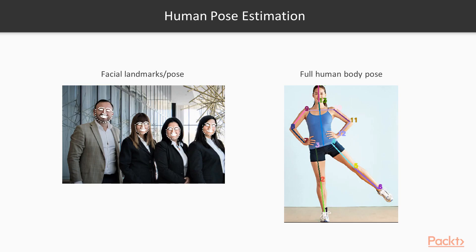So just to get started, what exactly are we talking about with Human Pose Estimation? We have landmarks, which are joints like feet, ankles, chin, shoulder, elbows, hands, head, and so forth.